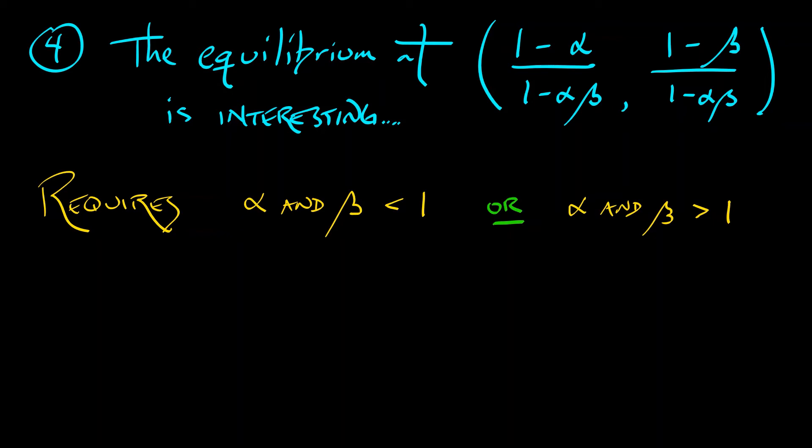Now, it's going to take a little bit of work for you to substitute these values into that derivative, compute the trace, compute the determinant. But if you do that, what you will find is that in the first case, where alpha and beta are both small, what we have is a sink. And in the second case, when alpha and beta are large, what you have is a saddle. I know that's going to take a little bit of work, but you can do it.